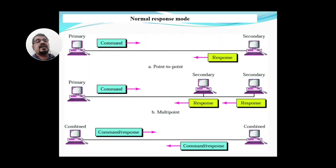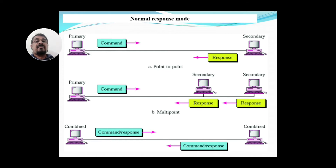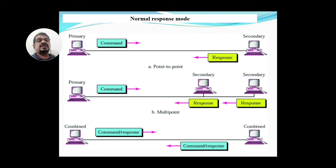In Normal Response Mode, devices are declared as primary or secondary devices. Primary devices send commands and secondary devices give responses. For example, servers can act as primary devices sending commands, and edge devices can act as secondary devices giving responses. Some devices can act as both primary and secondary — these are called combined stations.